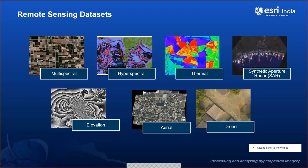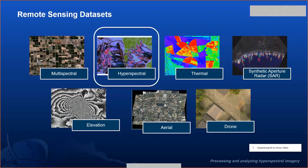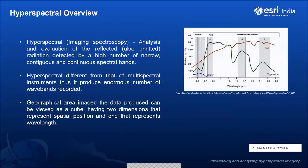We also have synthetic aperture radar — SAR data — which captures imagery through clouds, day and night. Then we have elevation datasets for topographic and surface analysis, and very high resolution datasets like aerial and drone imagery. Today we focus on hyperspectral analysis.